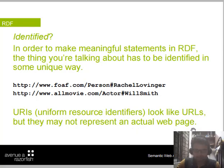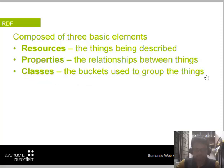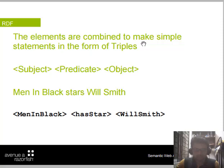RDF is composed of three basic elements: first, resources — the things being described; second, properties — the relationships between the things; and third, classes — the buckets used to group the things.